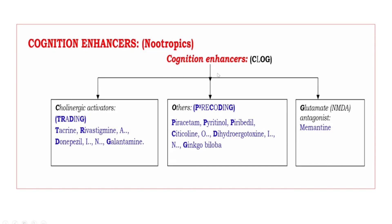When we come to the classification, these are divided into three groups. The mnemonic is COG — we look at the bold letters: C, O, G. C means cholinergic activators, O means others, and G means glutamate antagonists.